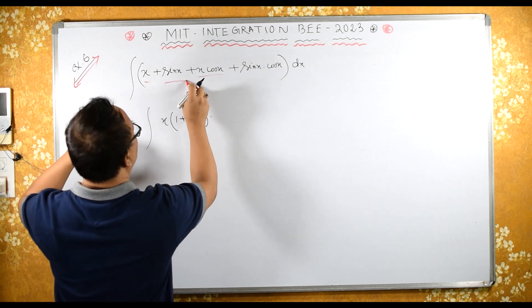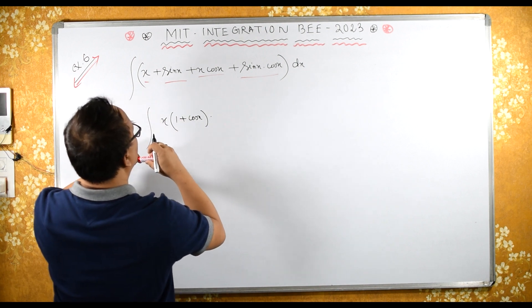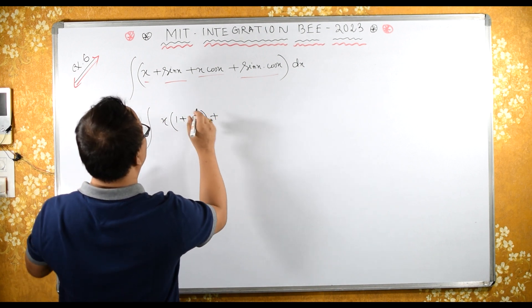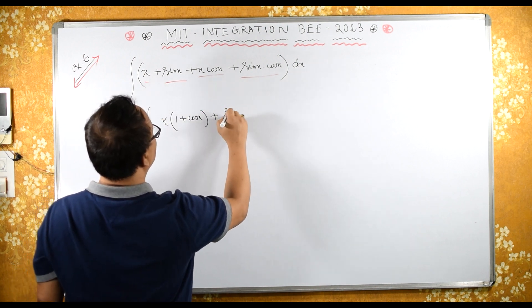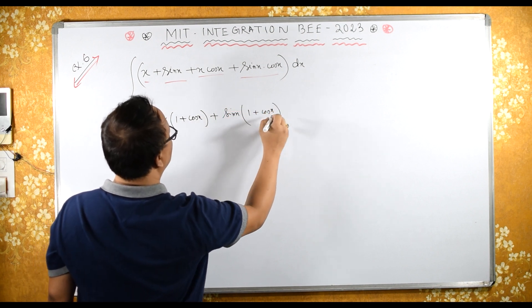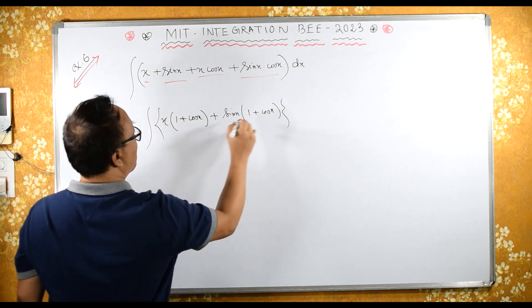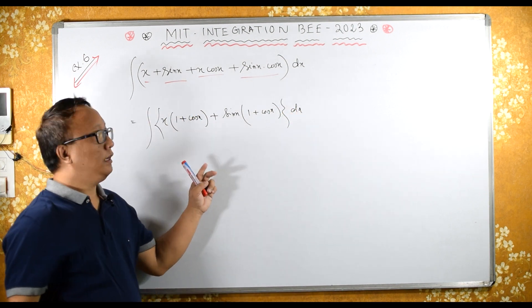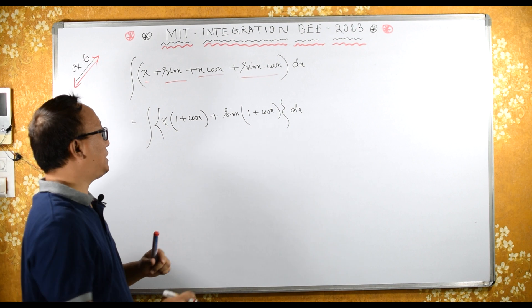From here, from these two, if I take sin x common, then 1 plus cos x dx. Now here 1 plus cos x is common, I can take once again.